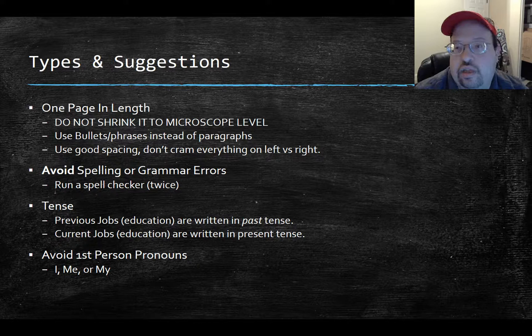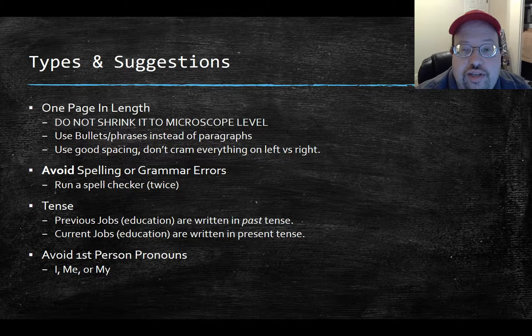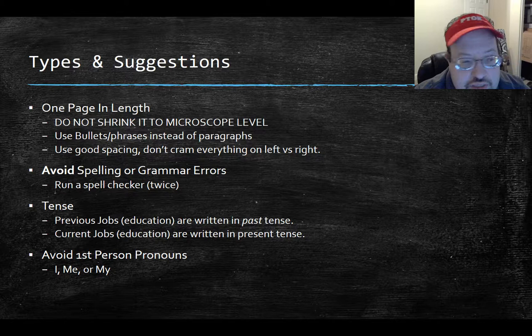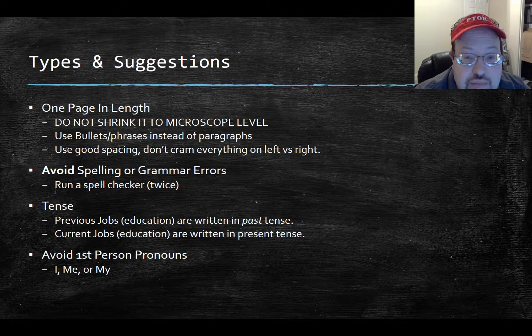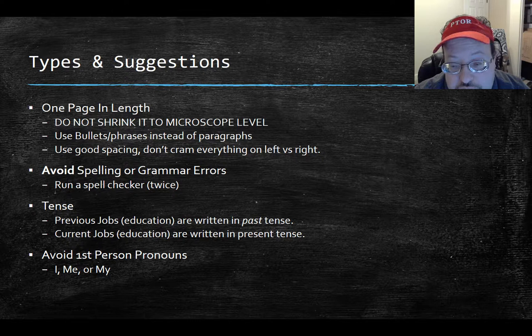Some types and suggestions — some gathered from the internet, some my own. Keep it one page in length; do not shrink it to a microscopic level. Please don't make it so you need a magnifying glass. Try to use bullets and phrases instead of paragraphs. If there are many multiple paragraphs and lines to read, it's too much. Just like your textbooks, you're more likely to read sections with bullets — they're easier to read than dense paragraphs.